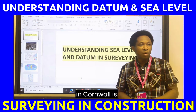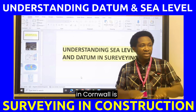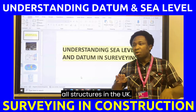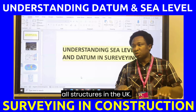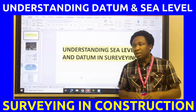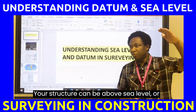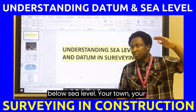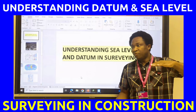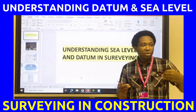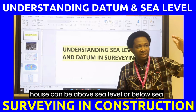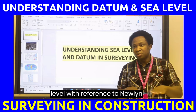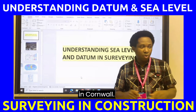Newlyn in Cornwall is the reference point for all structures in the UK. Your structure can be above sea level or below sea level. Your town, your village, your house can be above sea level or below sea level, with reference to Newlyn in Cornwall.